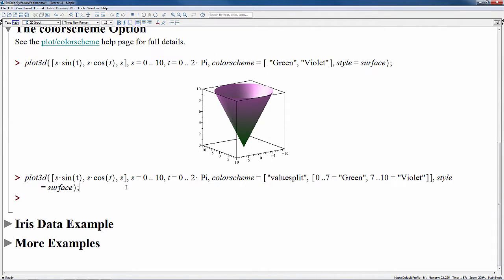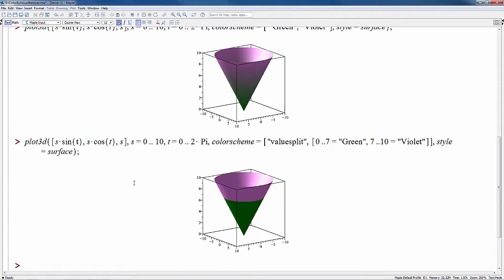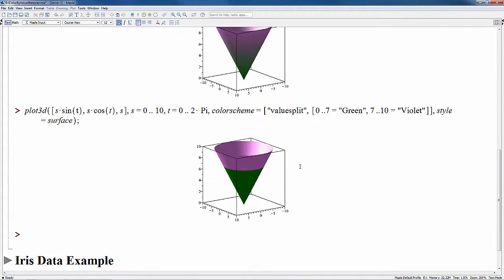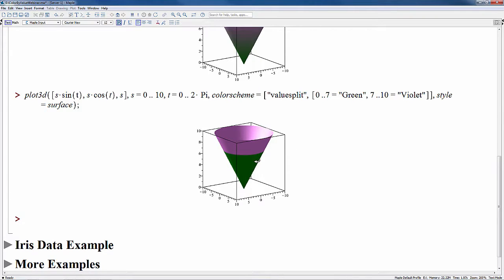In contrast, the value split scheme, which is the one we'll be examining in this webinar, here it colors the surface using only those colors requested. So instead of a gradient that goes from green to violet, we have some of the colors in green and some in violet.